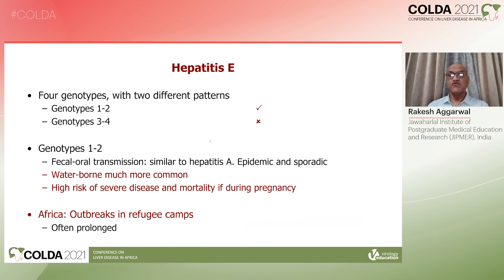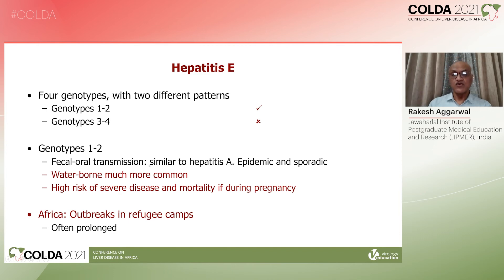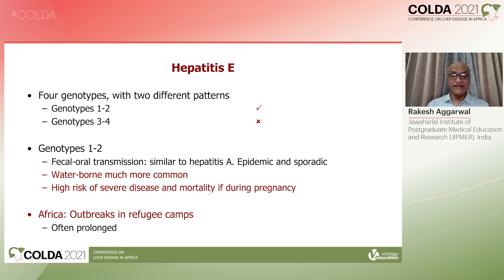Now let's move to hepatitis E virus. This virus has four genotypes with totally different epidemiological patterns. Genotype 1 and 2 are transmitted by the fecal-oral route, similar to hepatitis A, and this is what we will discuss today. A slight difference from hepatitis A is that person-to-person transmission is infrequent and waterborne infection is much more common. Also, when this infection occurs in pregnant women, there is a very high risk of fulminant hepatic failure and death. Genotypes 3 and 4 are found in developed countries of Europe and North America and occur in immunosuppressed people — that is not our topic today.